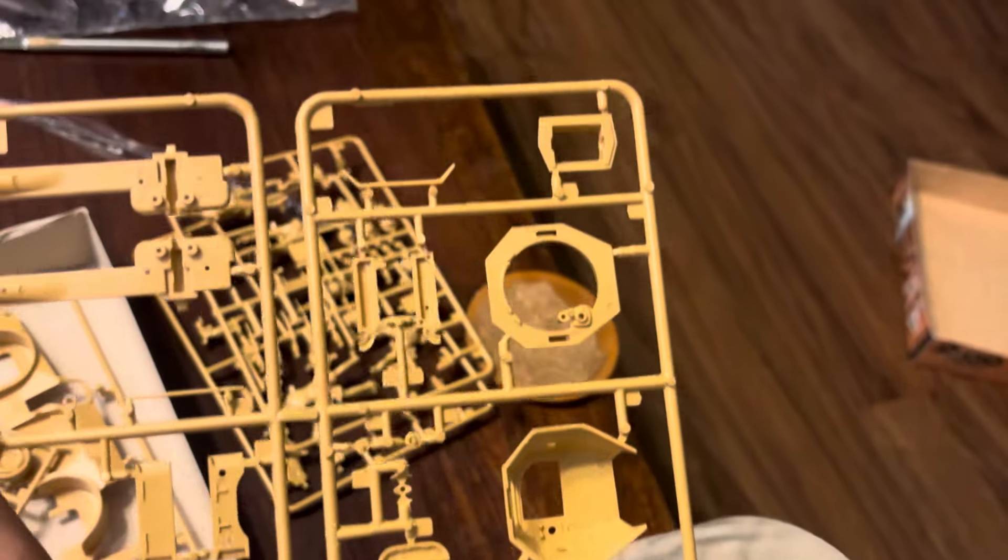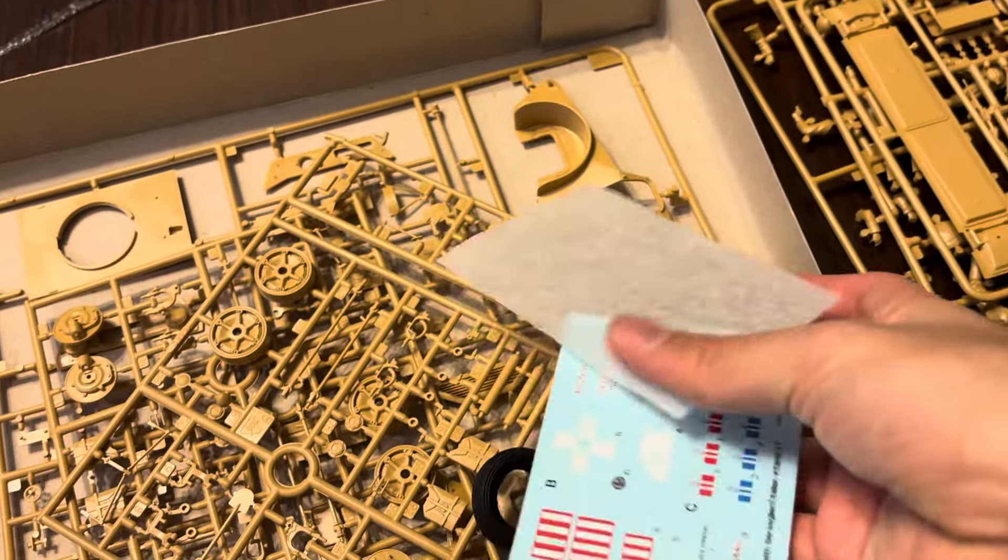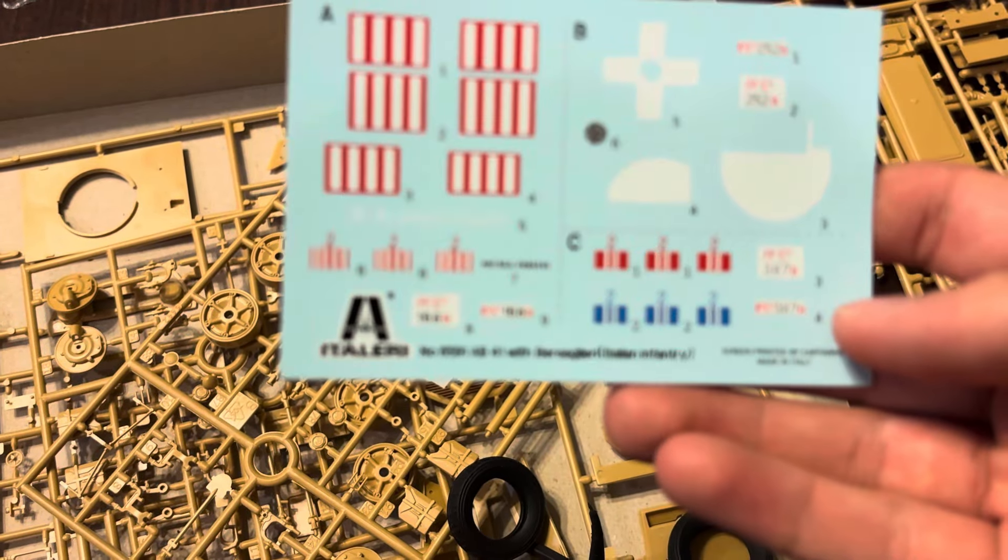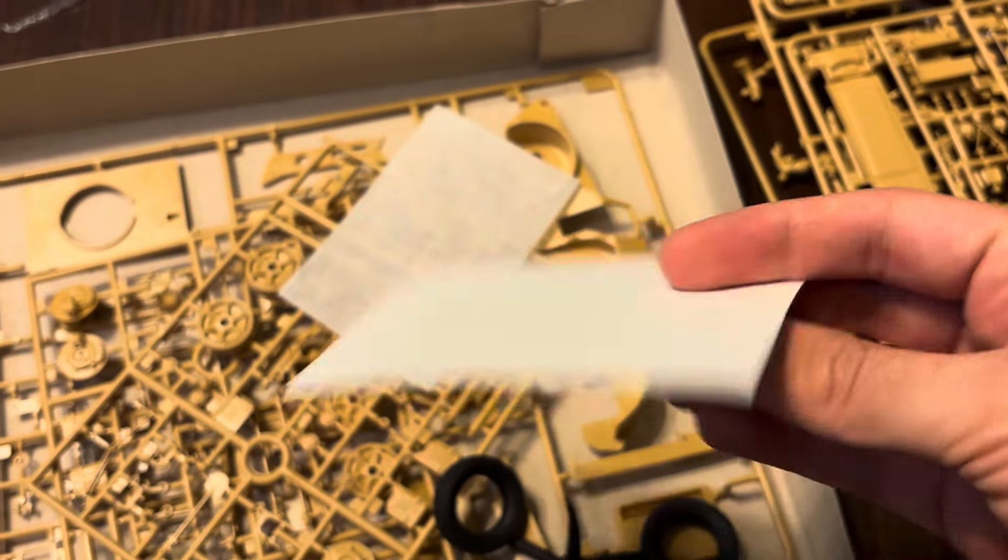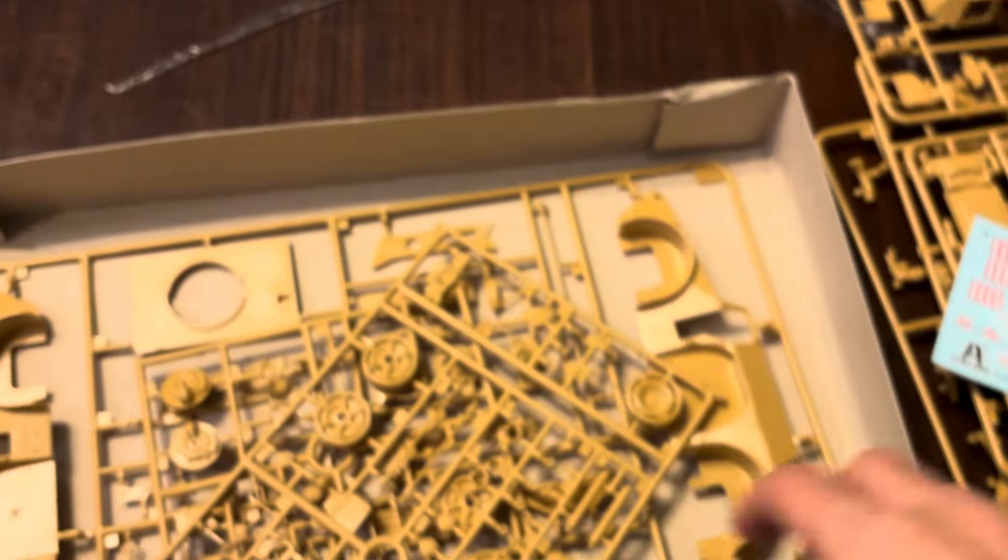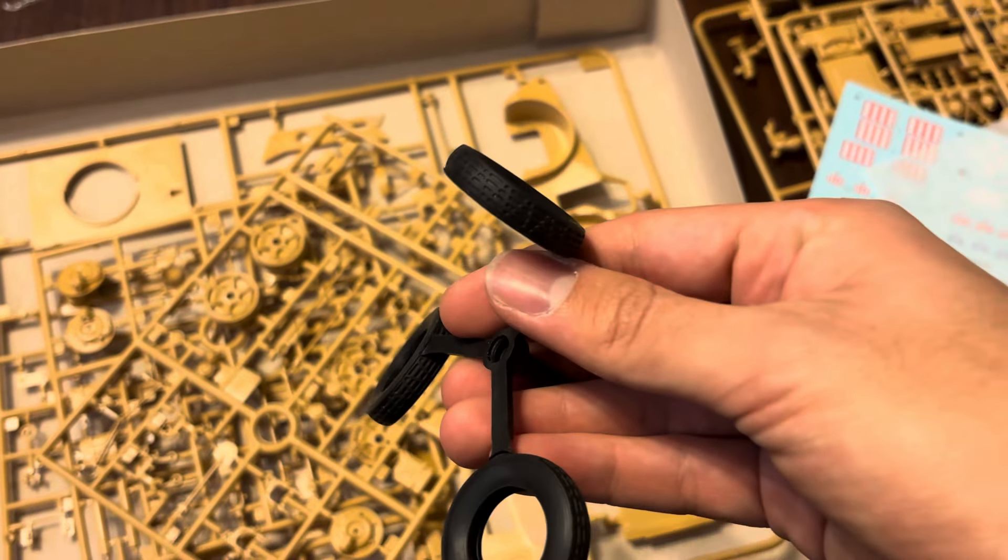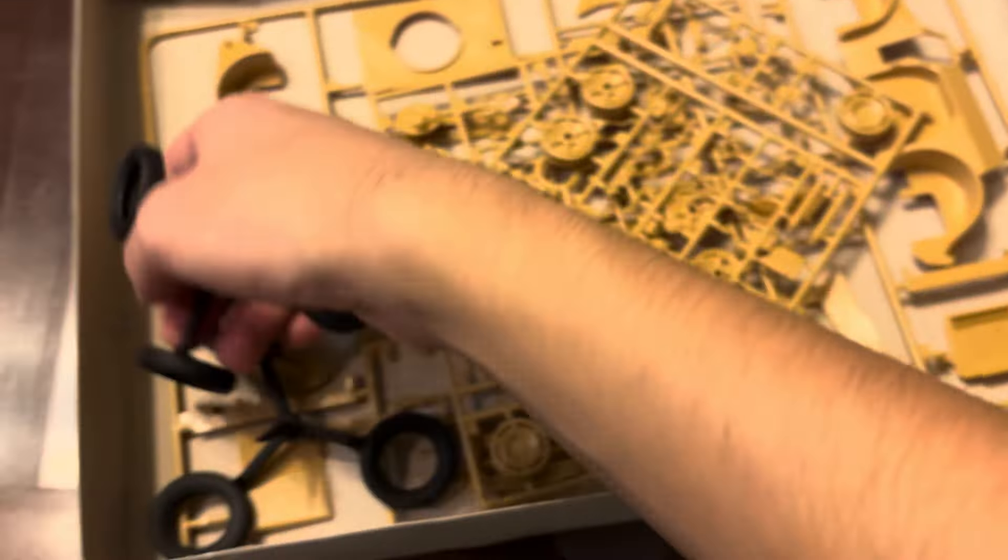Here we have the decal sheets. Pretty cool. Here we get our tires. You can see the detail on that, it's pretty cool. We get two of these.